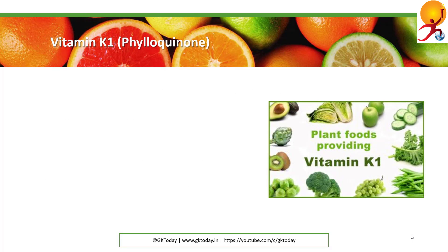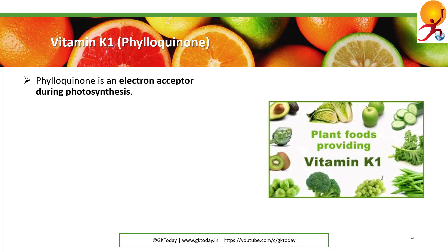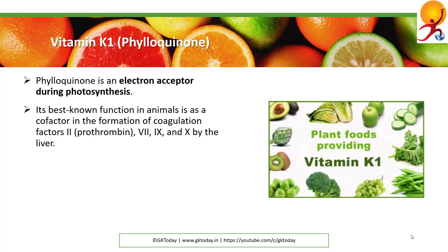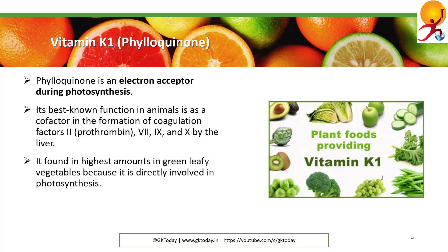Vitamin K1, or phylloquinone, is an electron acceptor during photosynthesis. It is best known in animals as a cofactor in the formation of coagulation factors 2 (prothrombin), 7, 9, and 10 by the liver. It is found in highest amounts in green leafy vegetables because it is directly involved in photosynthesis. It may be thought of as the plant form of vitamin K.